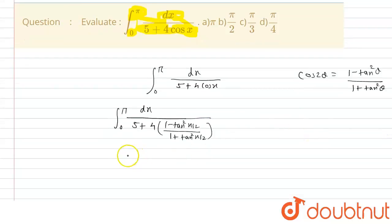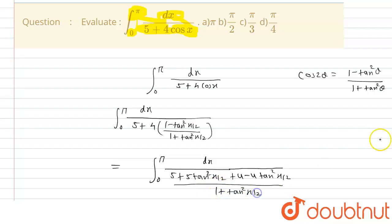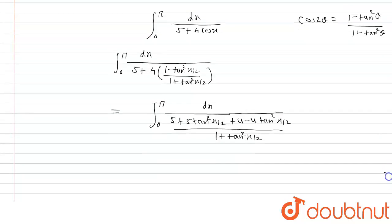Now that is 0 to pi dx upon 5 plus 5 tan square x by 2 plus 4 minus 4 tan square x by 2. And the LCM is 1 plus tan square x by 2. And we know that 1 plus tan square theta is equals to sec square theta. So this term will become sec square theta.